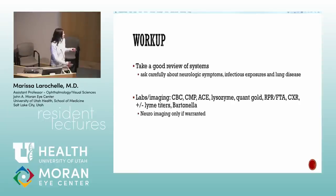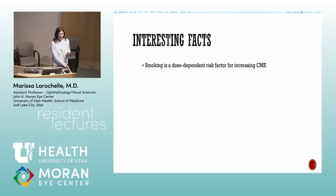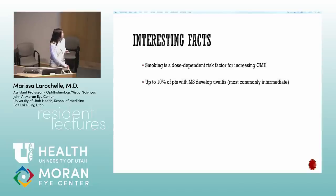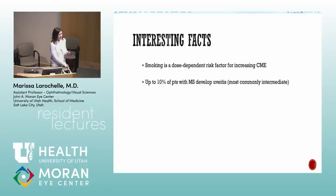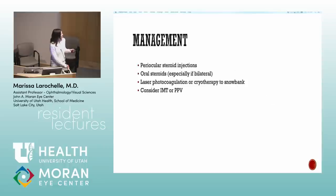Ask about review of systems for intermediate uveitis workup. Interesting fact: smoking is independently associated with CME in intermediate uveitis. The connection between MS and intermediate uveitis is real — we don't do MRIs on everyone, but we ask about neurologic symptoms. They are both autoimmune diseases, and autoimmune diseases run together, so prevalence is much higher than in the general population.